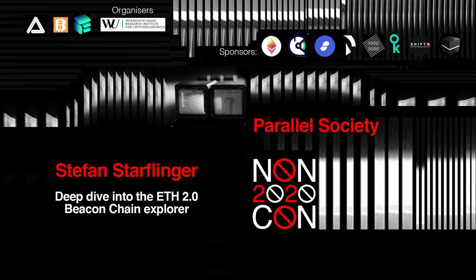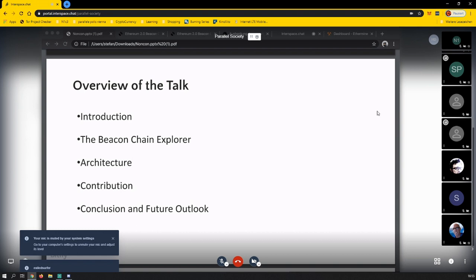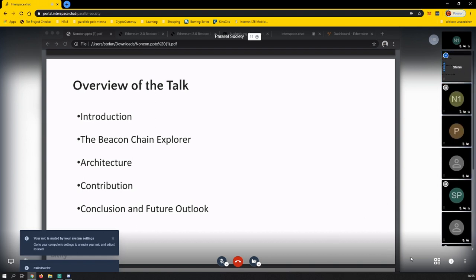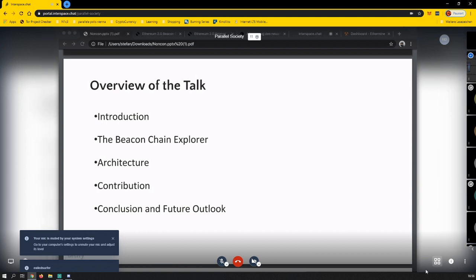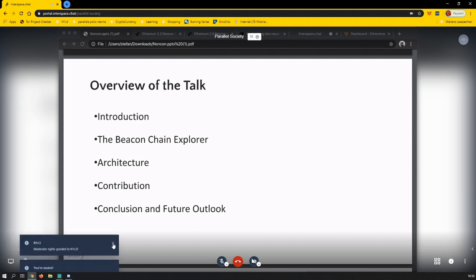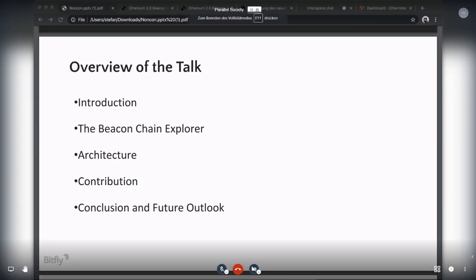I'm going to talk about the Beacon Chain Explorer that we've been working on. The talk is called Deep Dive into the ETH 2.0 Beacon Chain Explorer. I'm Stefan Staflinger and I work for Bitfly. I'm going to talk about the architecture, how we implemented the Explorer, how we might reconsider once phase one and sharding starts, and then a bit about the contribution since we're doing it all open source. We'll be happy for anyone who creates issues on GitHub, creates pull requests. We also have a Gitcoin grant. And lastly I'm going to conclude with a recap and future outlook of what we're currently working on and developing.